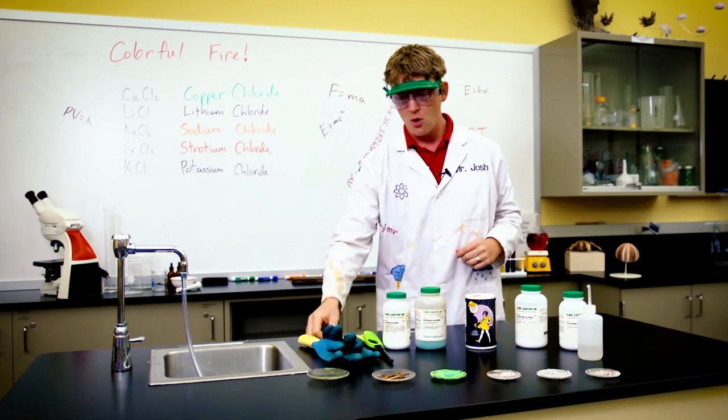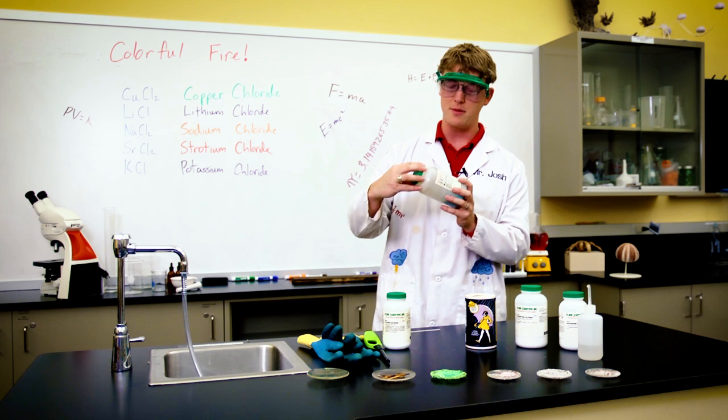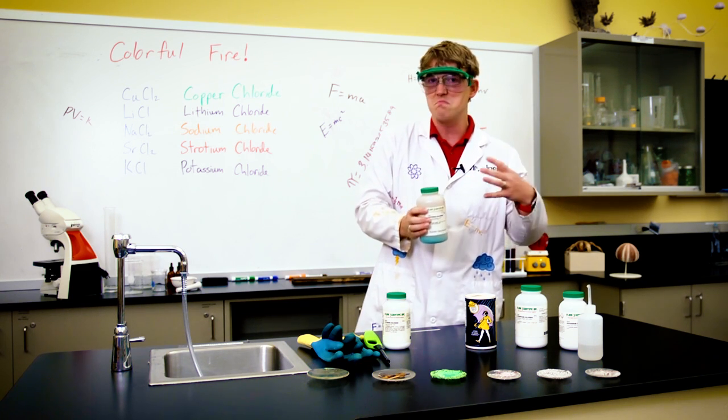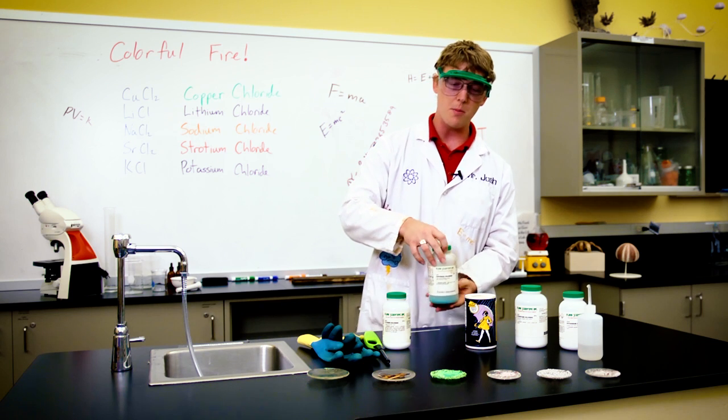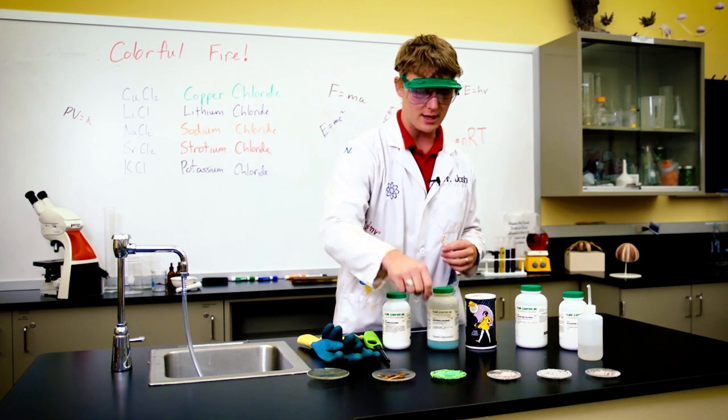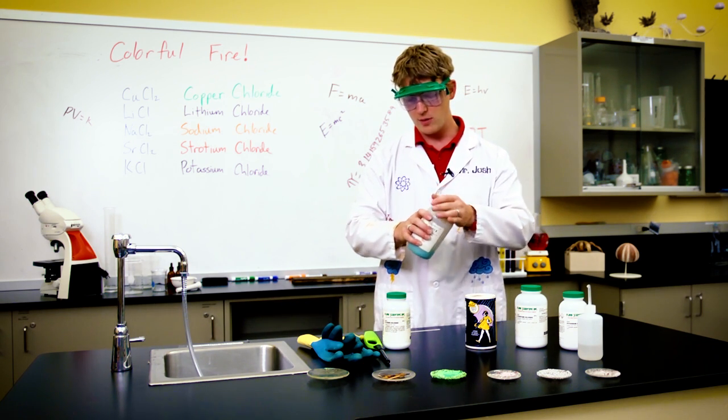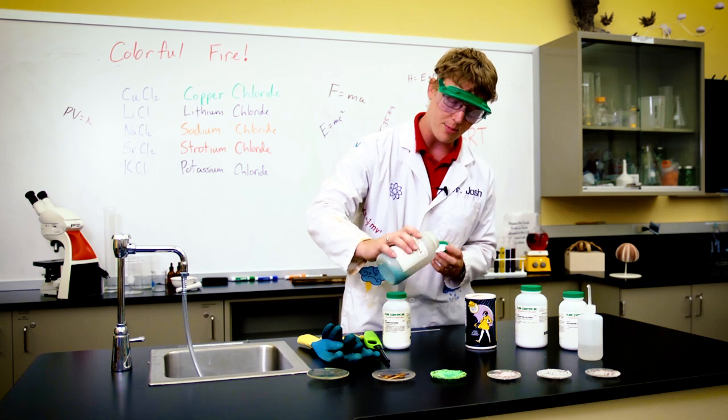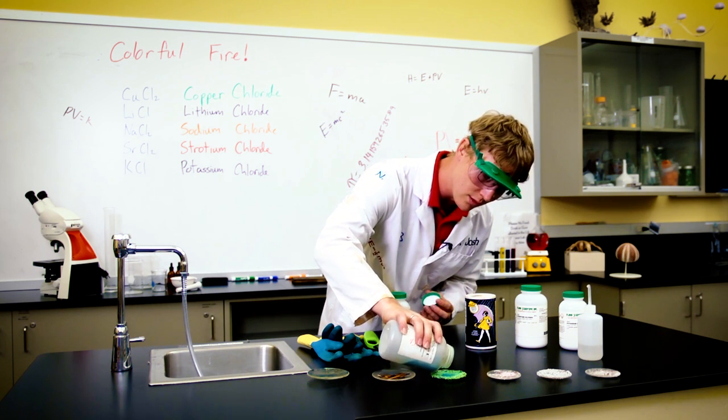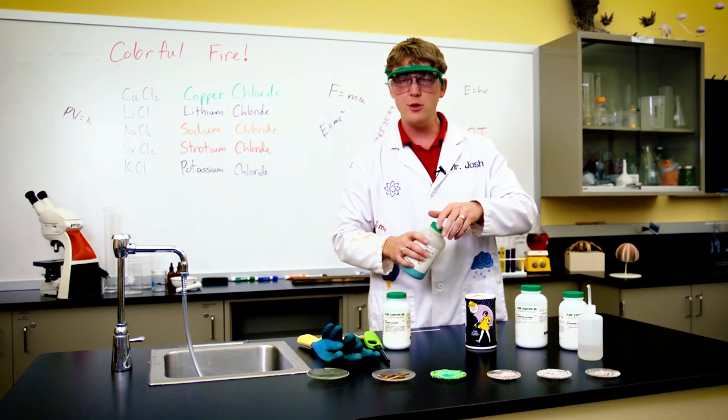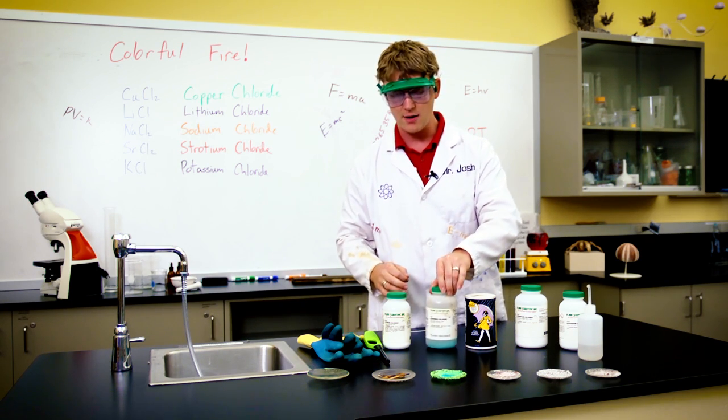So let's get started. Once you choose an element you're just going to take about a teaspoon of that element. It starts off as a powder. You're going to put it onto the watch glass. So we'll put a little bit of copper, this is our copper chloride. And then we're going to use denatured alcohol to actually light it on fire.